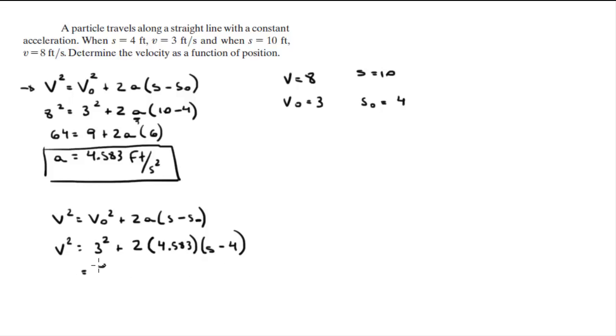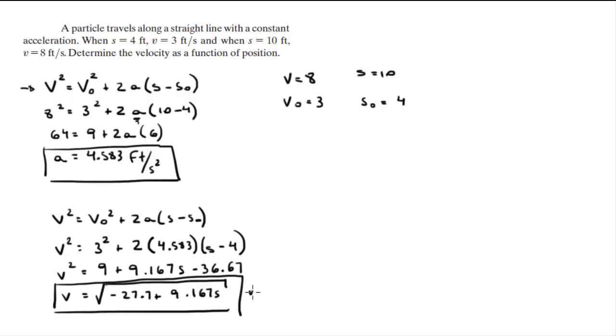So when you clean this up, this is 9 plus 9.167s minus 36.67. And we're going to put the square at the other side as a square root. And we're going to get that v is equal to the square root of negative 27.7 plus 9.167s. And that is the velocity as a function of the position, final answer for the velocity and the acceleration.